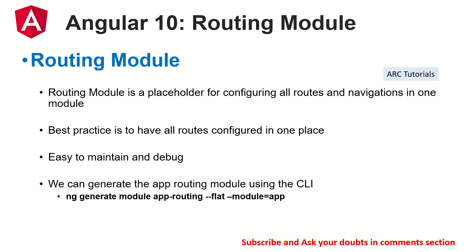Today we are talking about the router module — also called the routing module, also called the app routing module. All of these refer to the same base module which works with your main app module. Every module can have its own routing file; the one that comes by default for the app module is called the app routing module. A routing module is a placeholder where you configure all the routes and navigations for a particular module.